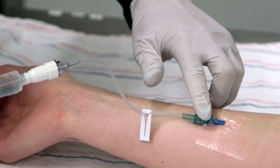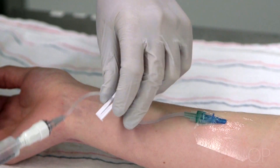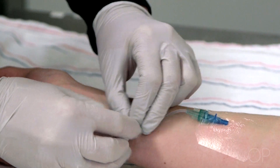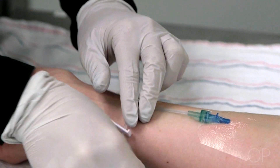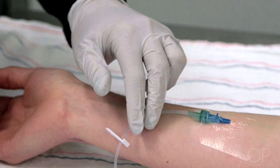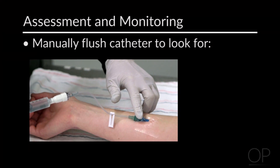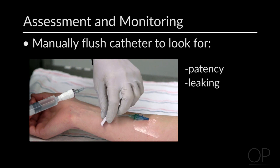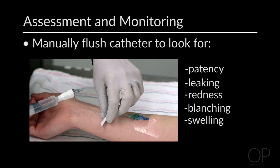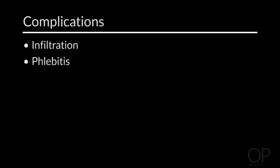Before using the IV, make sure it is patent for either continuous or intermittent use. If the infusion is continuous, monitor the IV site at least every hour. Once the IV is placed and deemed patent, place an occlusive dressing that allows for visualization. Manually flush the IV catheter to check for patency, leaking, redness, blanching, and swelling. Check the IV site frequently for patency or signs of complications, which can include infiltration, phlebitis, dislodgement, leaking, or loss of patency.